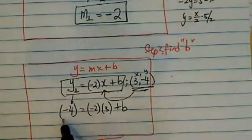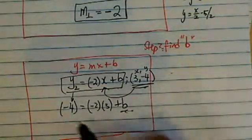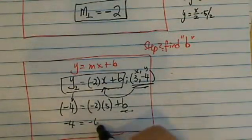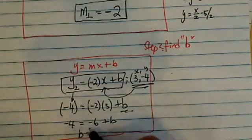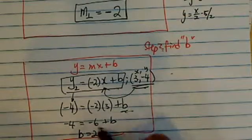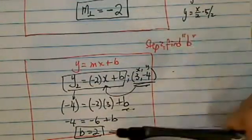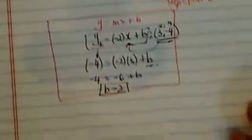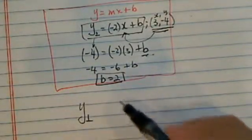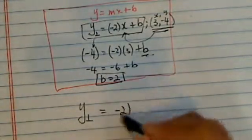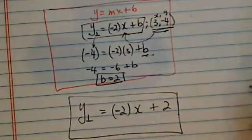I have one equation and one variable, so it should be pretty easy to solve. Negative 4 equals negative 6 plus b, so adding 6 to both sides gives b equals 2. Now I have both things I need: a slope and an intercept. Once I have both, my equation of the perpendicular line is y equals negative 2x plus 2. That's your answer.